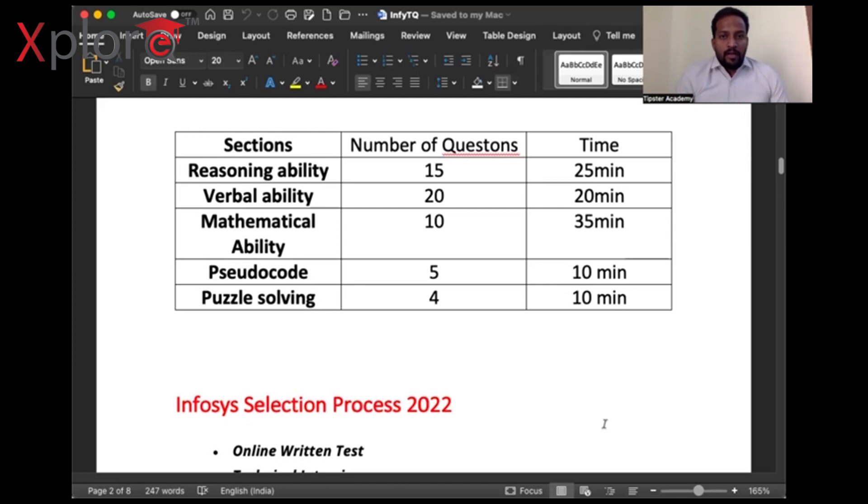Next, which is very important: what is the pattern of the exam, what modules does it consist of? Reasoning ability is one of the most important aspects with 15 questions and 25 minutes. Verbal ability has 20 questions in 20 minutes. My favorite, mathematical ability, has 10 questions in 35 minutes. Pseudocode has 5 questions in 10 minutes, and puzzle solving has 4 questions in 10 minutes. You will not be expected to answer at a master level; they'll be asking questions for a fresher who is aspiring to enter an MNC.